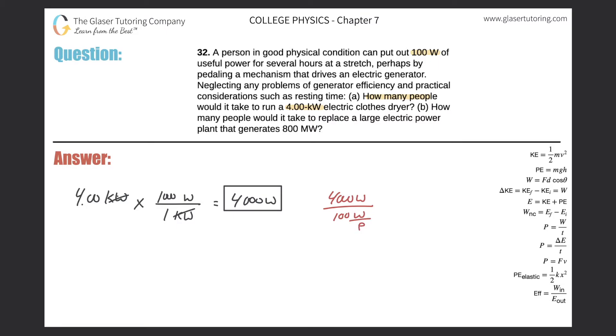And essentially when this value, this person value being in the denominator of the denominator is essentially a numerator value. But don't worry too much about the units. I've gone over dimensional analysis before, and I think this one's fairly straightforward. So it should be 4,000 divided by 100. So this would take about 40 people to run a clothes dryer.